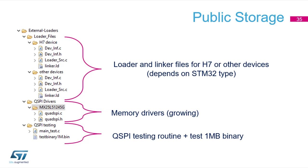The loader files folder is split into two sections because the H7 device has AXI SRAM at a different address. Both sections contain drivers and linker files needed for external loader development. The next folder in public storage is the Quad SPI drivers folder — currently there is only one memory driver, but it should contain more and more drivers in the future.